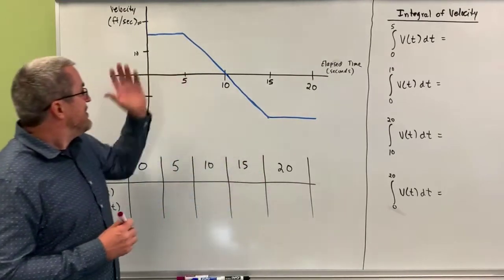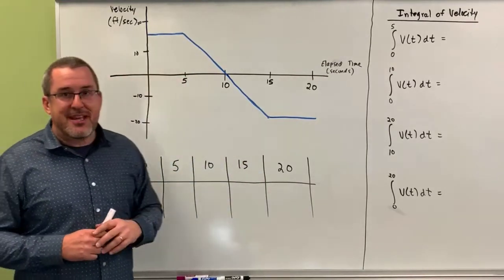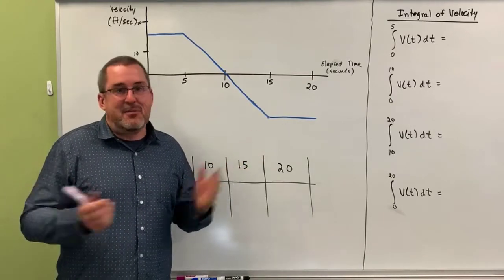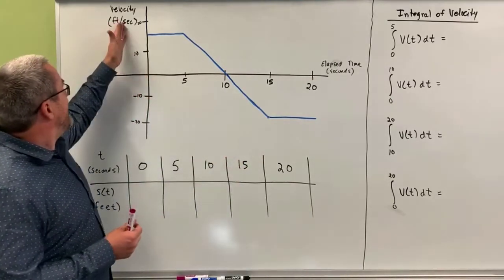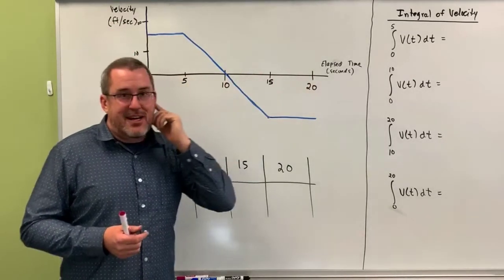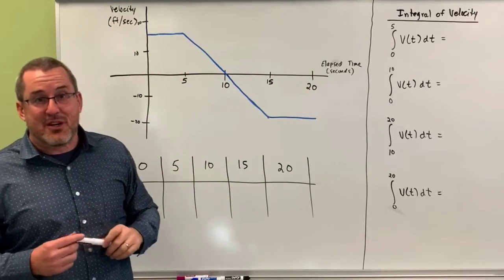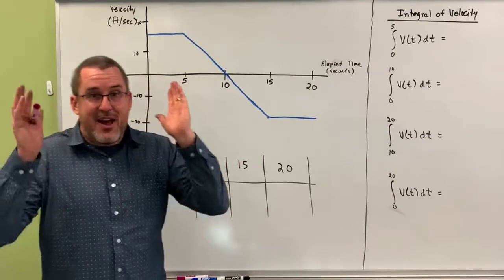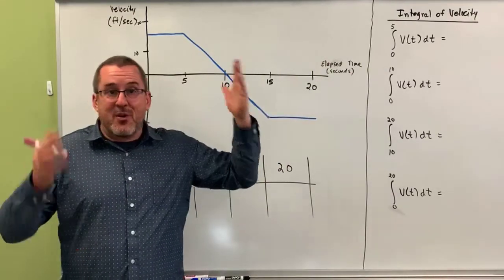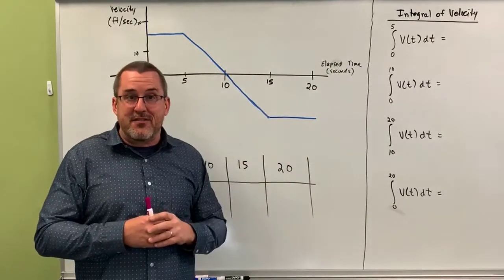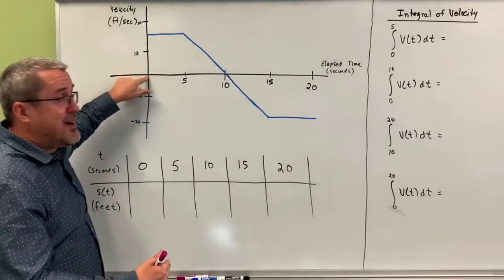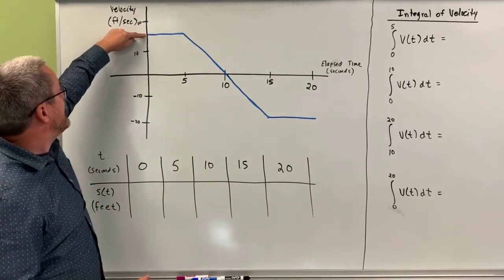The graph we're examining here is this hypothetical graph of a subway train. This is the velocity of the train in feet per second and this is an elapsed time — a total of 20 seconds we're going to look at. Imagine that we're at the train stop and we see the train coming, and we're going to start keeping track of things then. At time zero is when we're going to start keeping track of the train's velocity.